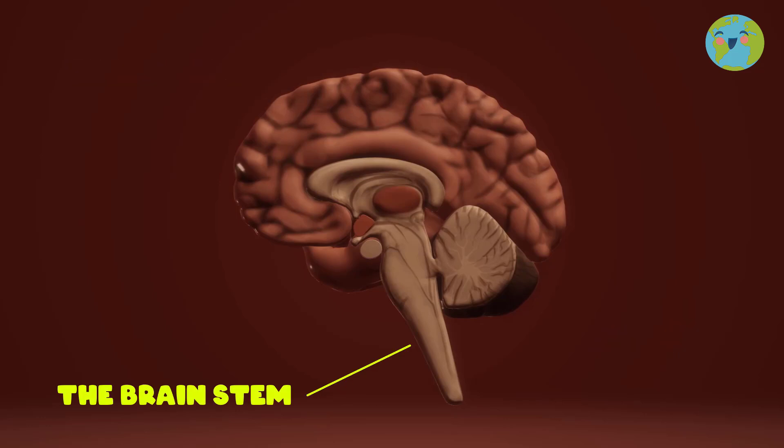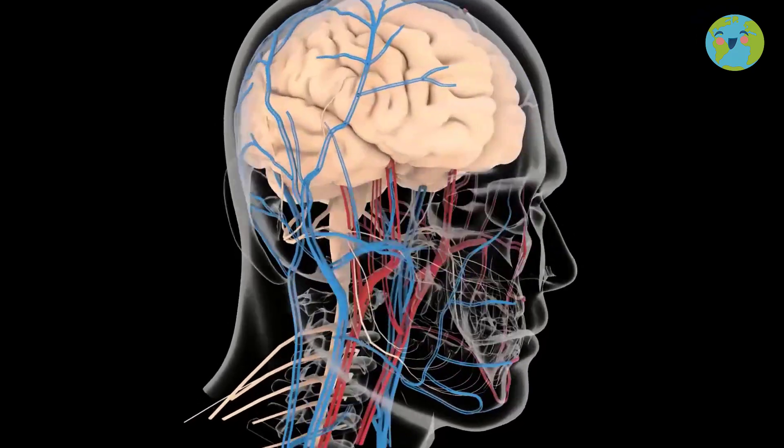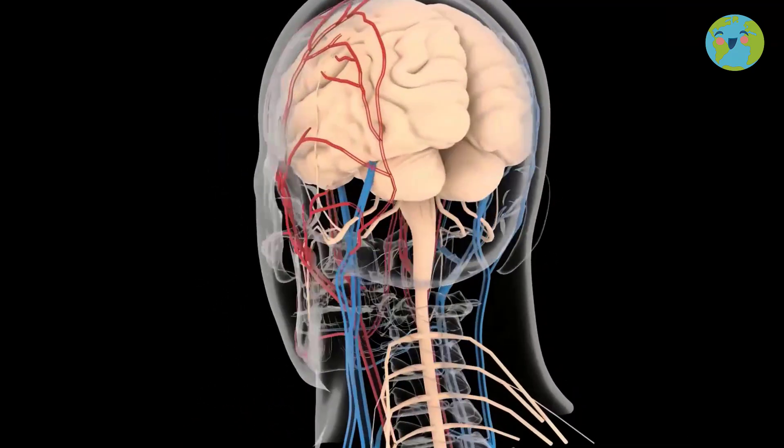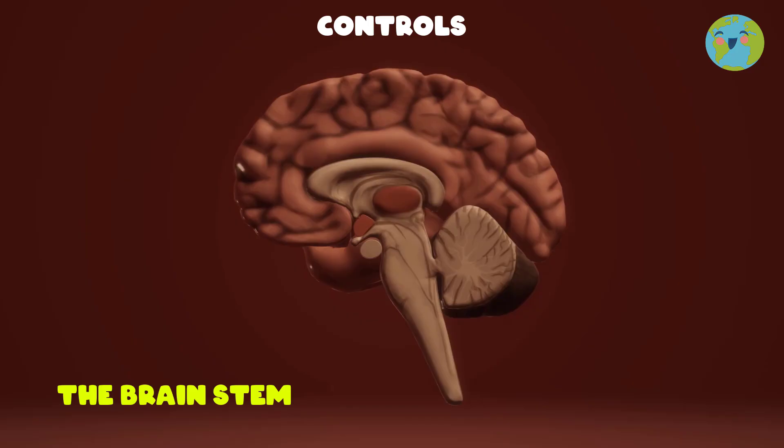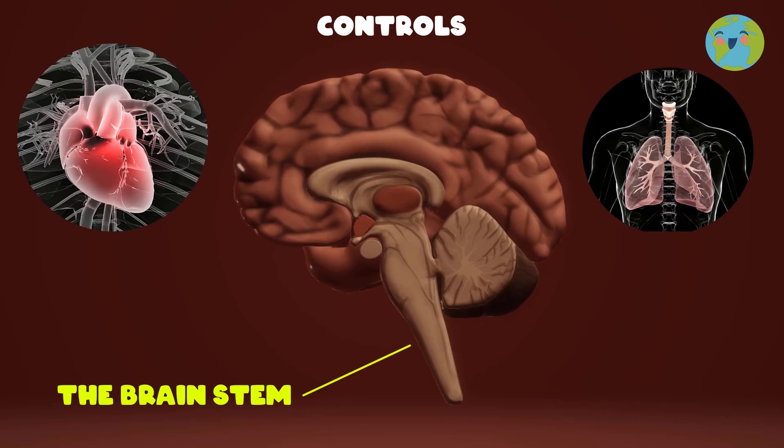The brain stem is located at the base of the lower part of the brain and connects our brain with the rest of the body through the spinal cord. It has a vital or very important function for us to be able to live. It controls heart rate, breathing, and digestion.